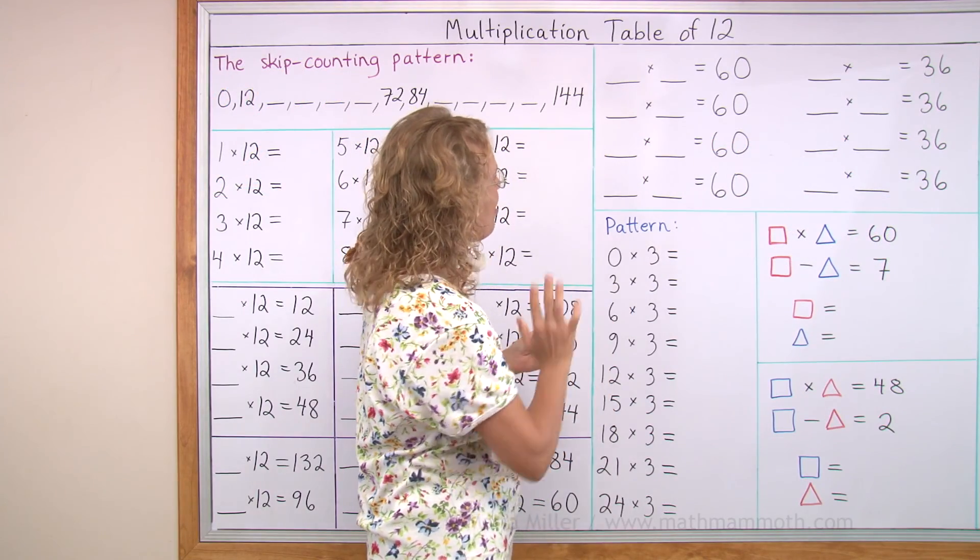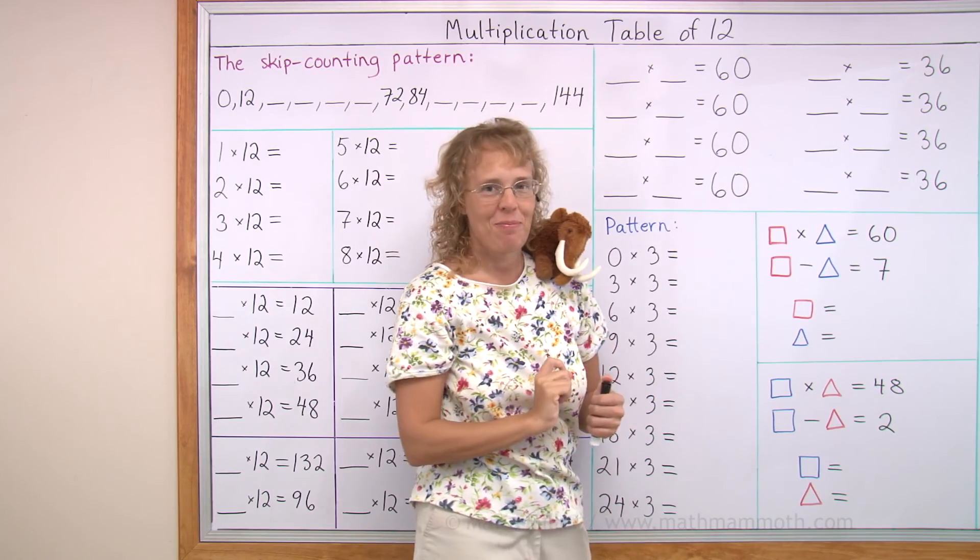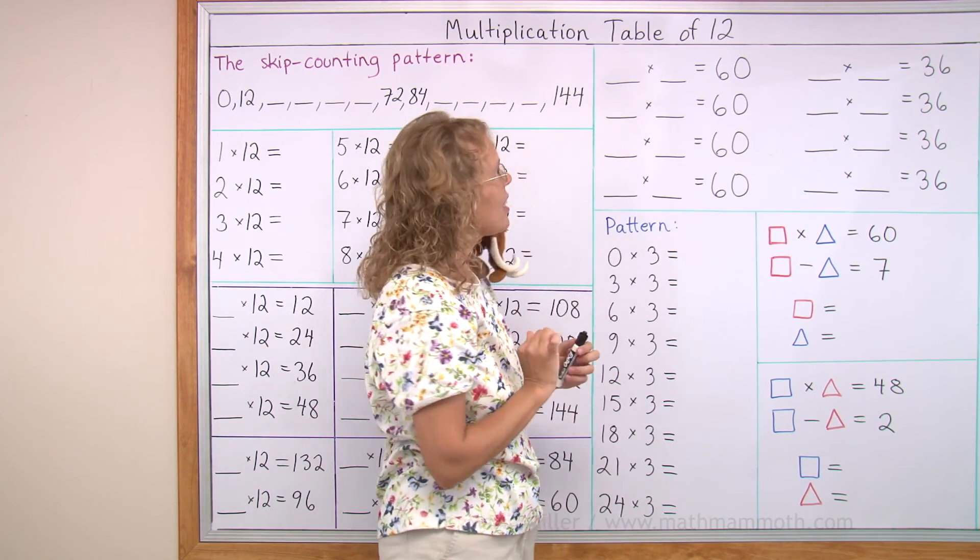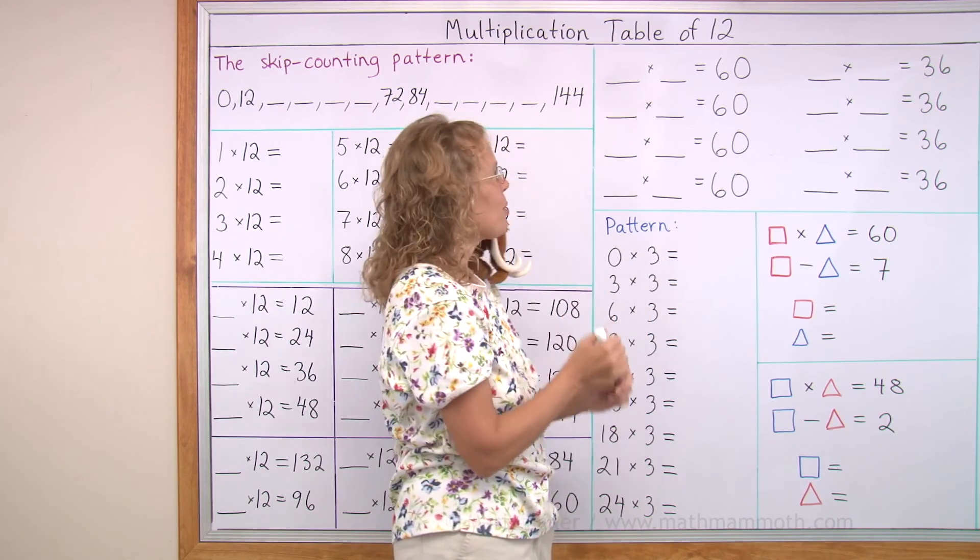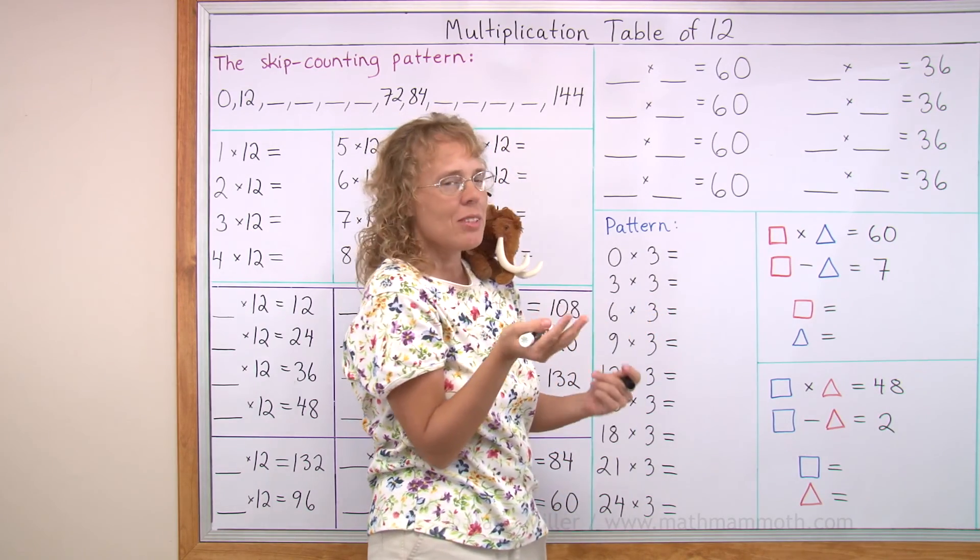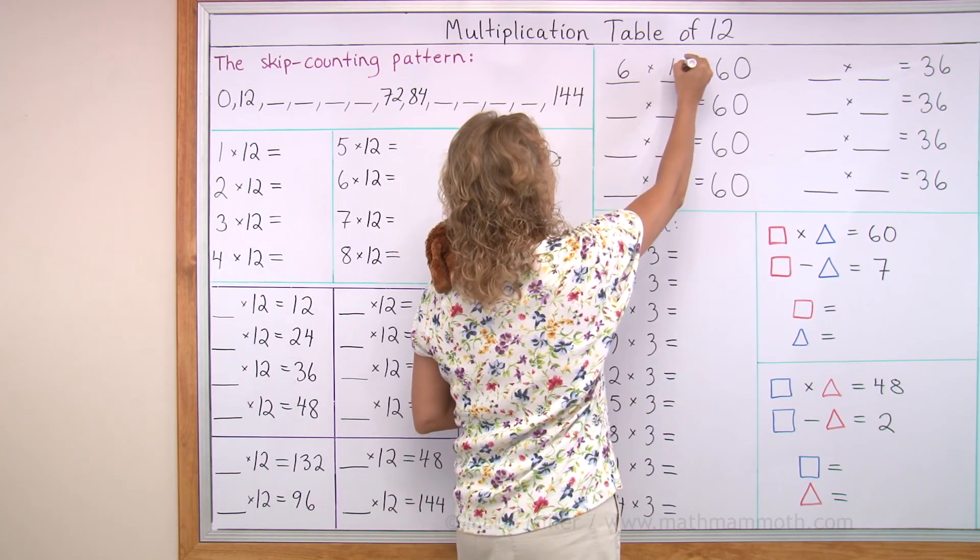Over here, our task is to find numbers so that when you multiply those numbers, you get 60. And many different possibilities. What times what makes 60? Give me one possibility. Well, 60 is in the table 10, right? So we could write 6 times 10.